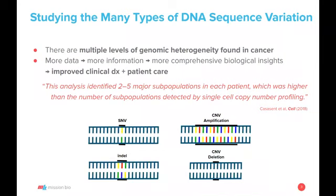When you couple the ability to measure both SNVs and CNVs at a single cell level, you get more information about the clonality of your cells, which in turn means that you get more biological insights into your sample, which ultimately can improve clinical diagnostics and patient care. In a recent paper in Cell by Nick Navin's group — the leaders in looking at SNVs and CNVs on a single cell level — they found this analysis identified two to five major subpopulations in each patient, which was higher than the number of subpopulations detected by single cell copy number profiling alone. This gives credence to the notion that we want to study both SNVs and CNVs at the single cell level to get a complete picture of what's happening in a disease.